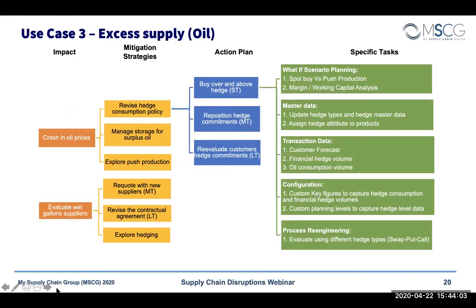Push production is one of the primary solutions when you have an excess stock situation — on products where you know you're going to sell them in the future and don't have shelf life issues. You can start scenario planning on how much you can produce and what the impact is on your production network and product cost. In the short term, we would update hedging data, run simulations, and then use the results to update master data — such as assigning new hedge attributes and entering transactional data like financial hedge volume and oil consumption volume.